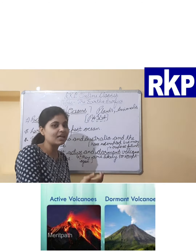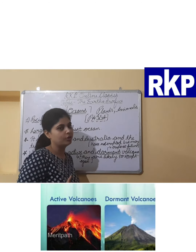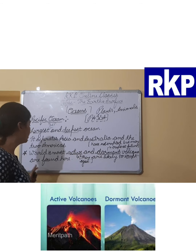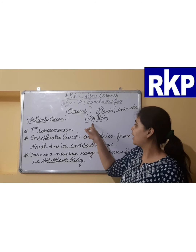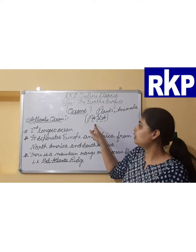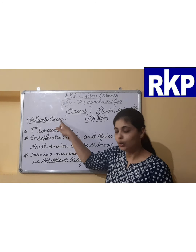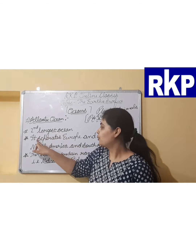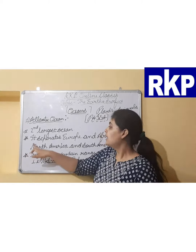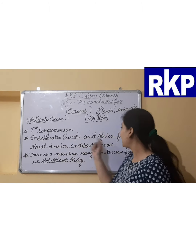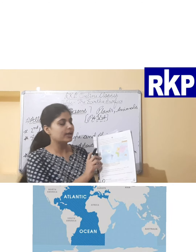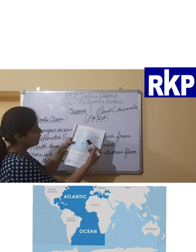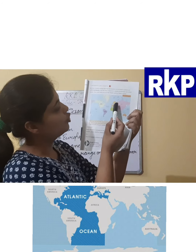The world's most active and dormant volcanoes are also found in the Pacific Ocean. Active volcanoes are those likely to erupt again — they have erupted within the last 10,000 years. Dormant volcanoes have not erupted for a long period of time but may erupt in the future. The world's most active and dormant volcanoes are found here in the Pacific Ocean.